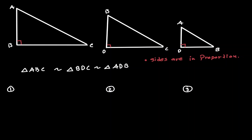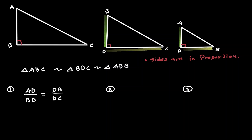Let's compare the middle and the smallest triangle. We can see that AD is going to be in proportion with BD, and that is going to be equal to the proportion between DB and DC. When we set these proportions, we have a scenario of a geometric mean, because the expression on the denominator in the first fraction is equal to the expression on the numerator in the second fraction. This is an important result we will use when working with similar right triangles.